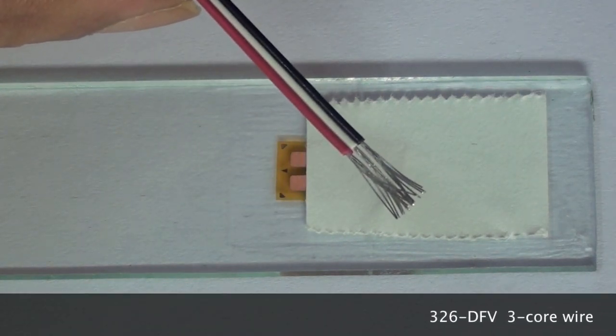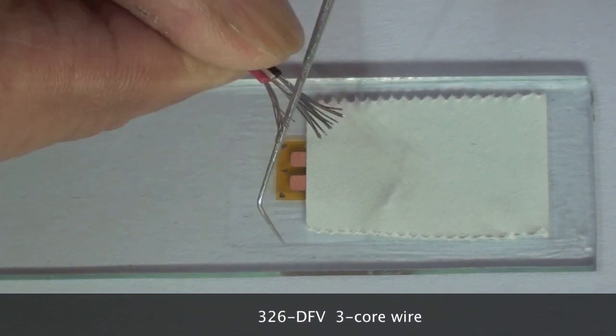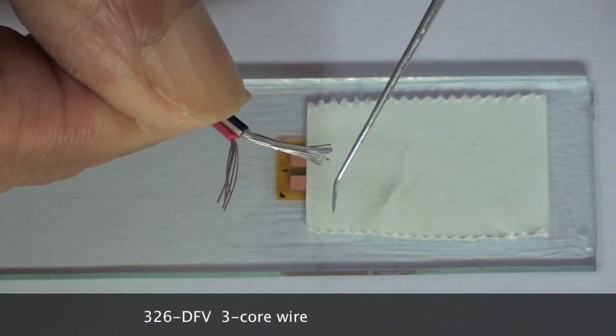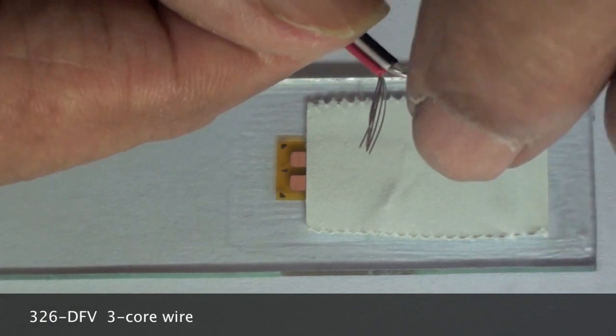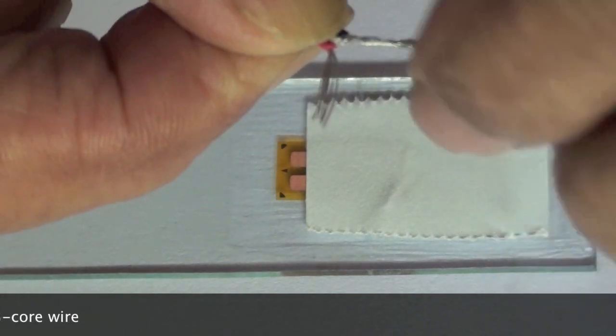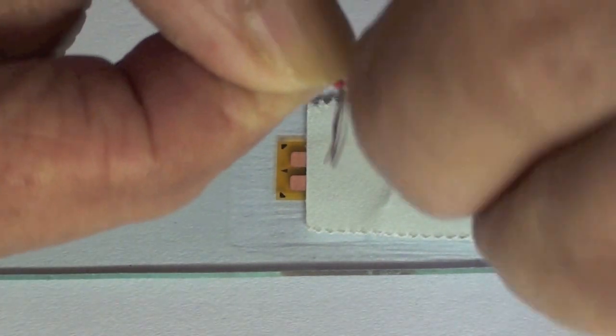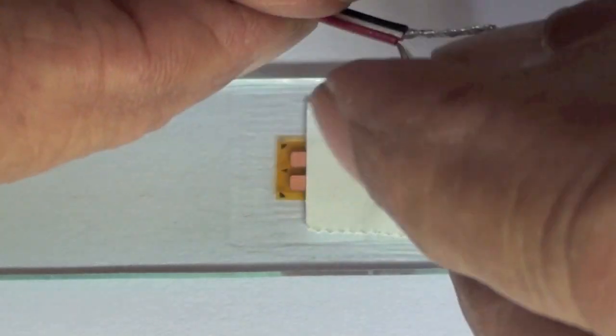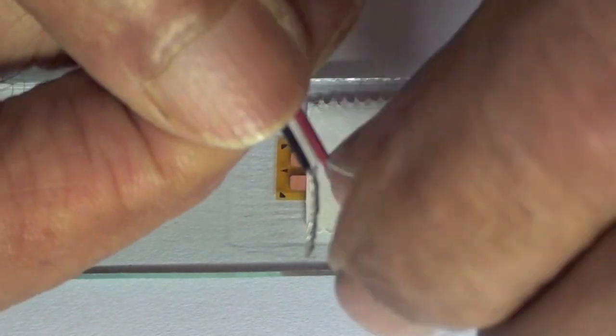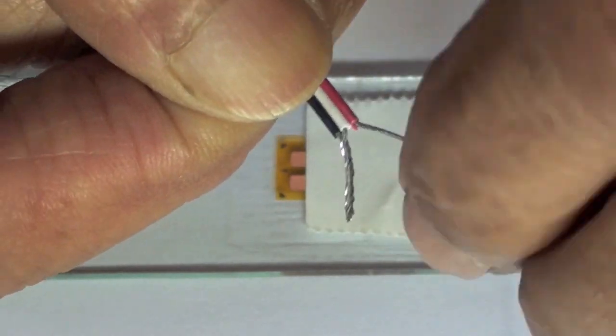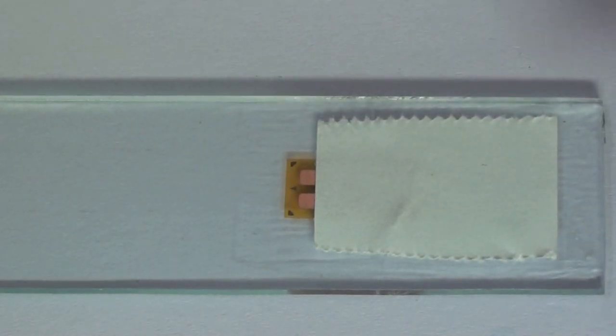For single element strain gauges, a 3 lead wire connection is used to connect the gauge to an instrument as a quarter bridge. The conductors of one lead wire are separated from the other two and the conductors are twisted tightly until the twist extends all the way to the insulation.